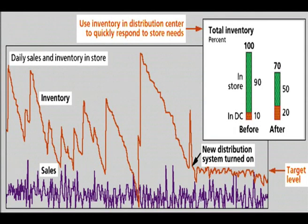This shows a graph of inventory and daily sales in a store together with the sales. Before the new distribution system is turned on, the inventory is grossly greater than the sales. As soon as the distribution system is turned on, the inventory tracks the sales.